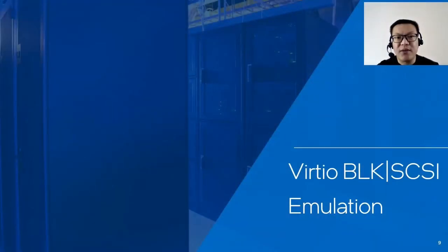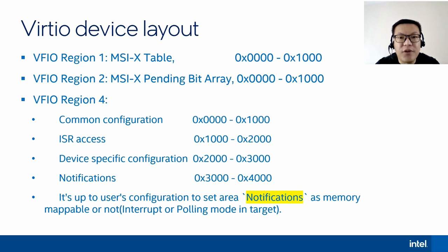Let's see the detailed implementation of the emulated VHOST block device and SCSI device in SPDK. As we already know, VFR user needs to emulate PCI devices in the remote process, so the VFR user server process needs to define what the device layout looks like as the first step. We will define MSI-X capability to use region 1 as the MSI-X table and region 2 as the MSI-X pending bit array, reserving one page for each of those two areas. According to the VHOST specification, we need to define virtio-specific capabilities for each virtio device configuration section.